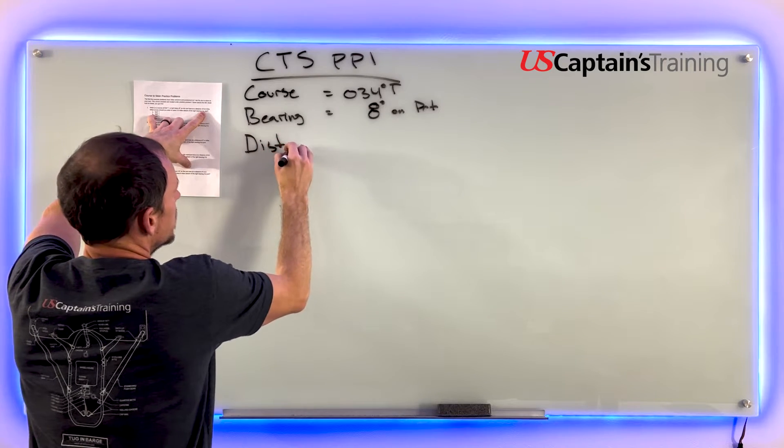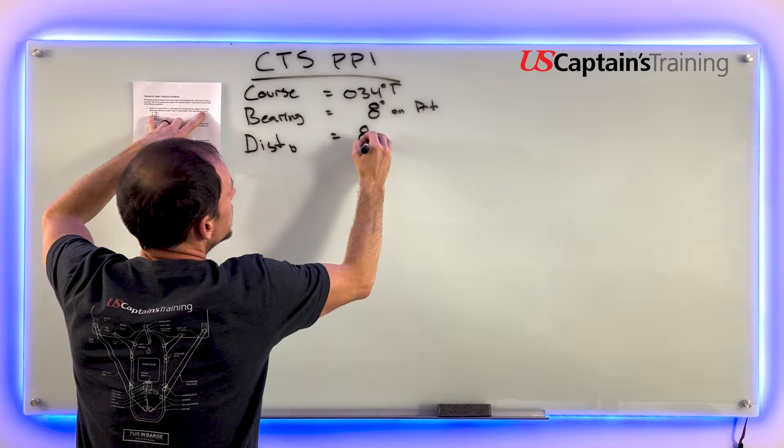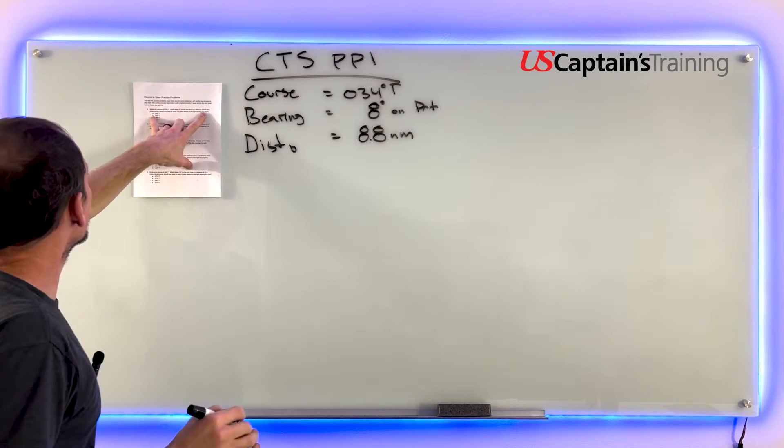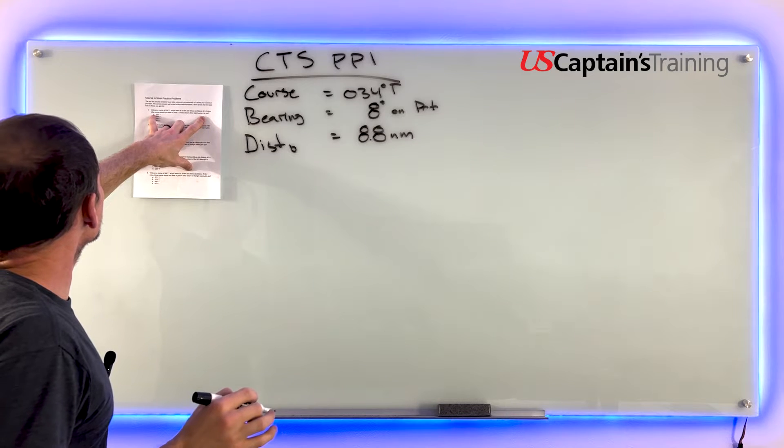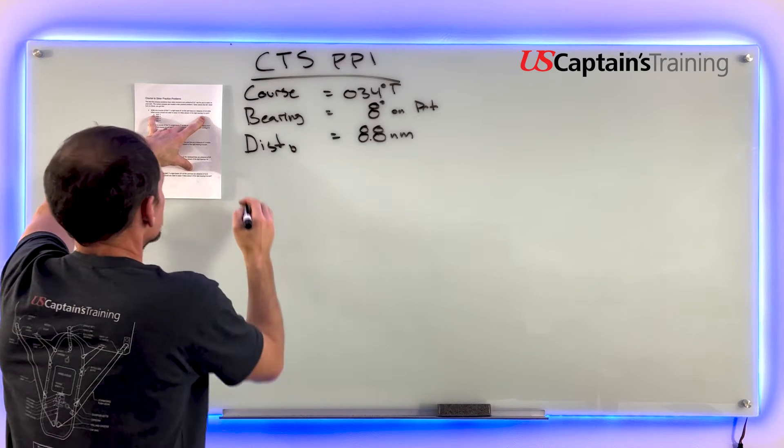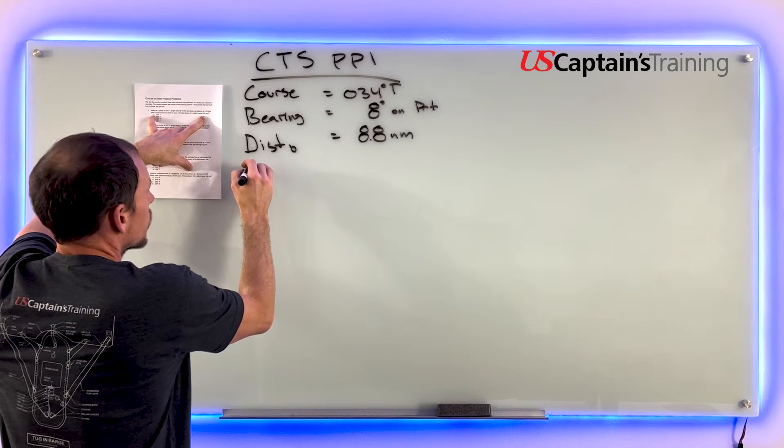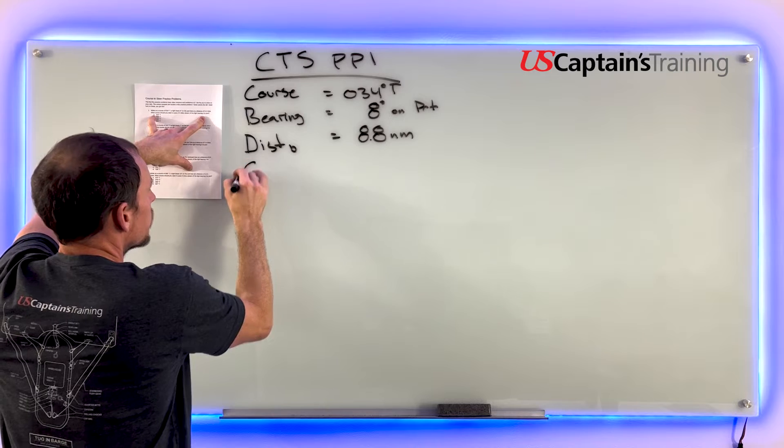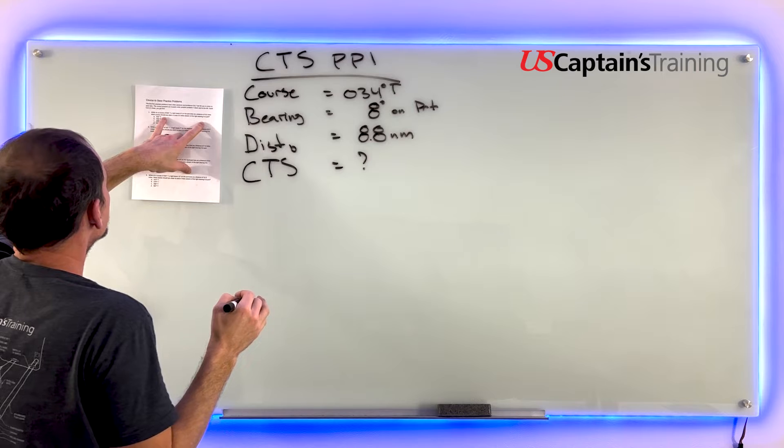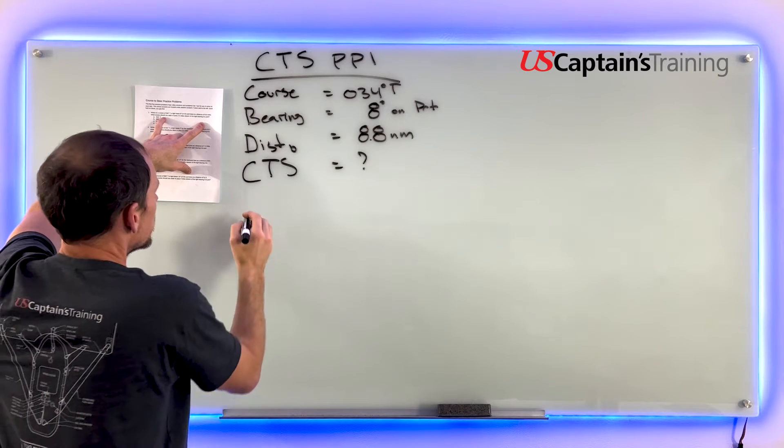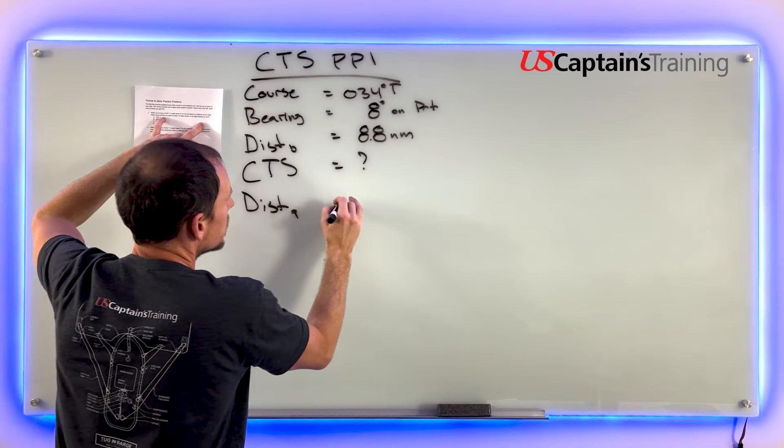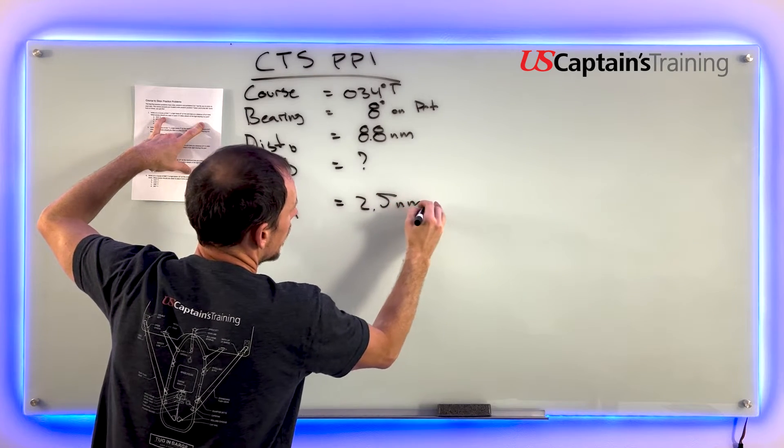It gives us a distance of 8.8 nautical miles. The question asks: what course should you steer to pass 2.5 miles abeam of the light leaving it to port? We need to find the course to steer, and the distance abeam is 2.5 nautical miles.